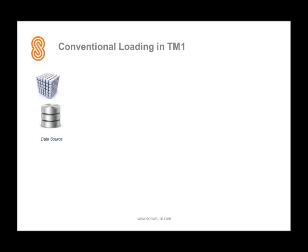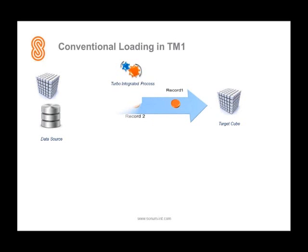In the conventional loading in TM1 we have a source like an external data warehouse or a TM1 cube. We have a target cube and in order to load data from source to the target we build a turbo-integrated process. As soon as we run this process, data will flow from source to target, but it will process only one record at a time.